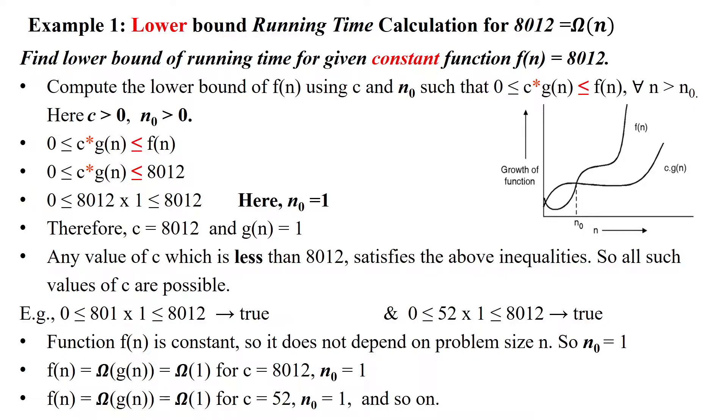Hi, welcome to lower bound running time calculation for given constant function f(n) equal to 8012.